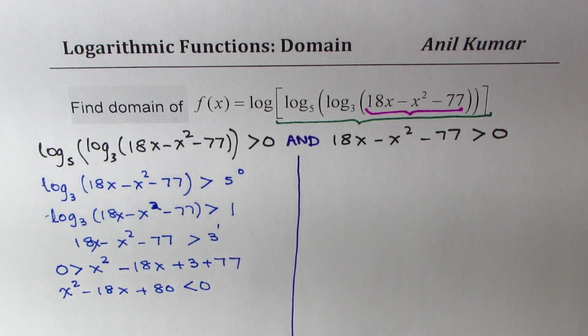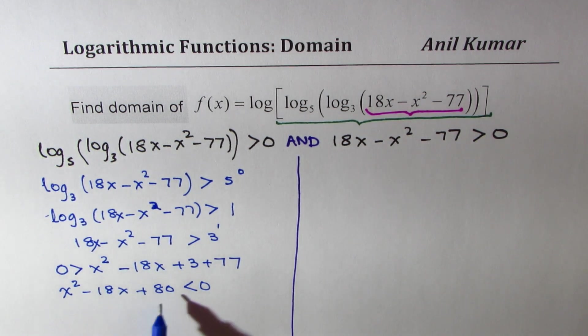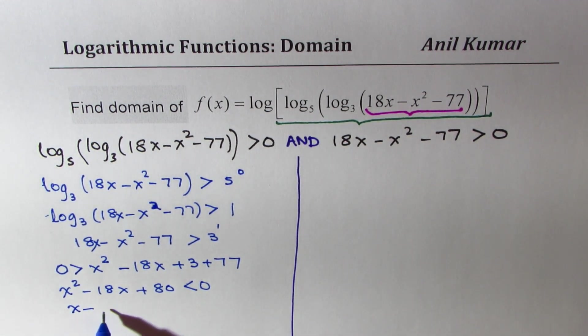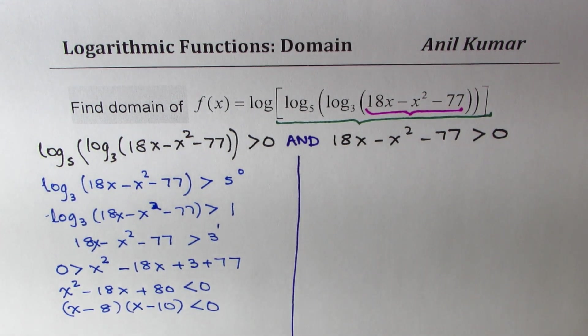Now you could factor. What will give you product of 80 and sum of -18? 8 times 10, both negative. So (x - 8)(x - 10) should be less than 0. That gives you the partial domain.